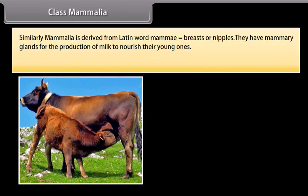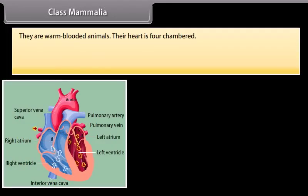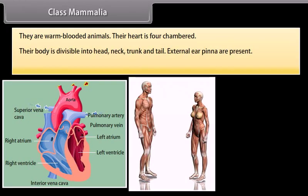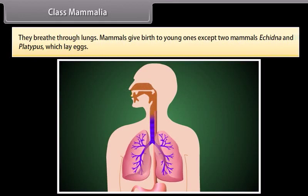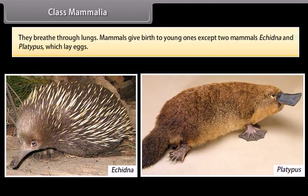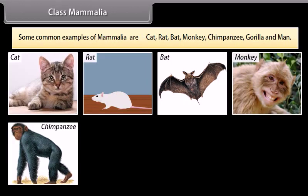Class Mammalia. Mammalia is derived from Latin word mamma, meaning breasts or nipples. They have mammary glands for the production of milk to nourish their young ones. Their skin has hair and sweat and oil glands. They are warm-blooded animals. Their heart is four-chambered. Their body is divisible into head, neck, trunk, and tail. External ear pinnae are present. They have four limbs. A diaphragm divides the body into two cavities internally. They breathe through lungs. Mammals give birth to young ones, except Echidna and Platypus, which lay eggs. Common examples are cat, rat, bat, monkey, chimpanzee, gorilla, and man.